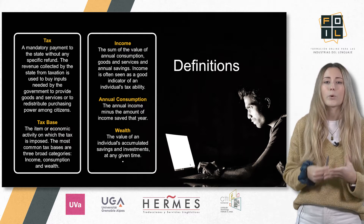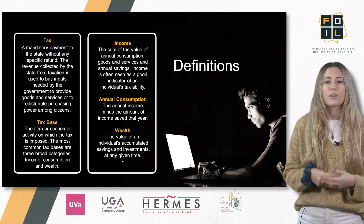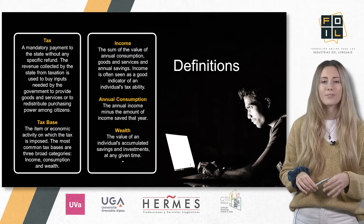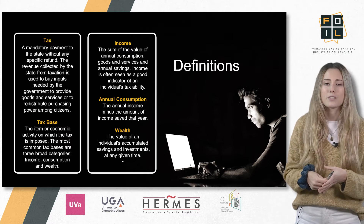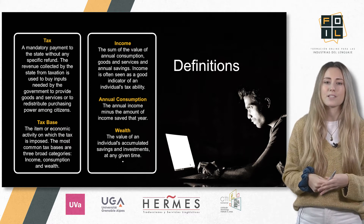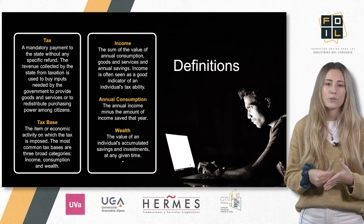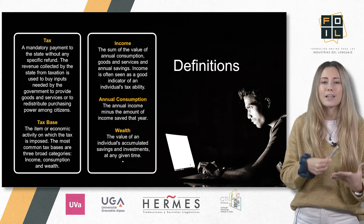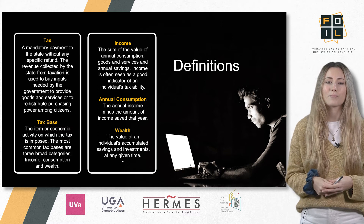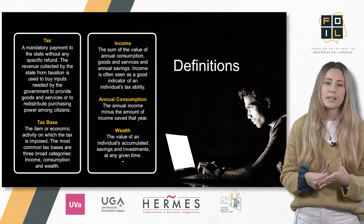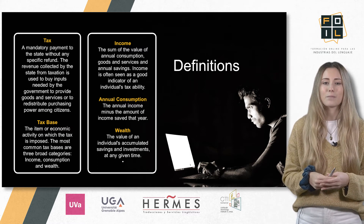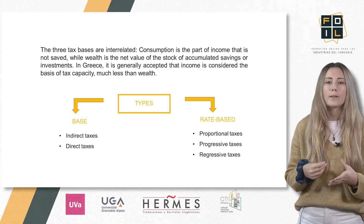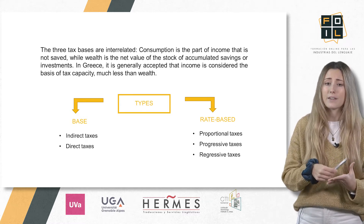Tax base is the item or economic activity on which the tax is imposed. The most common tax bases are three broad categories: income, consumption, and wealth. An individual's income is the sum of the value of annual consumption of goods and services and annual savings. Income is often seen as a good indicator of an individual's tax ability. A person's annual consumption is annual income minus the amount of income saved that year. Wealth is the value of an individual's accumulated savings and investments at any given time. These three bases are interrelated: consumption is the part of income that is not saved, while wealth is the net value of the stock of accumulated savings or investments.